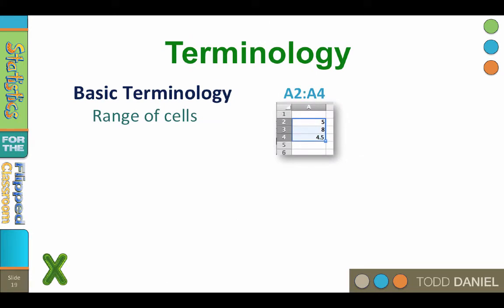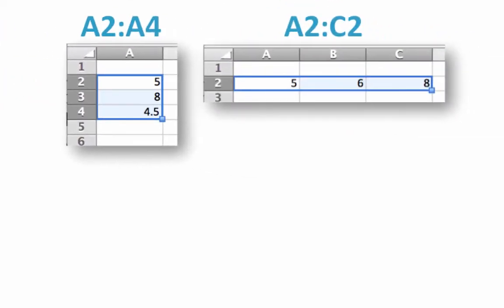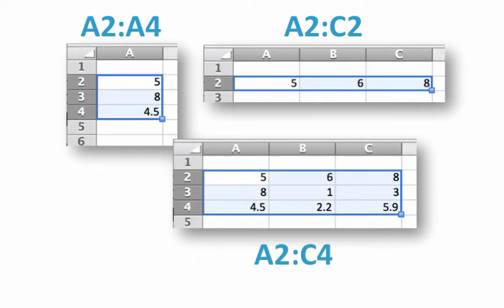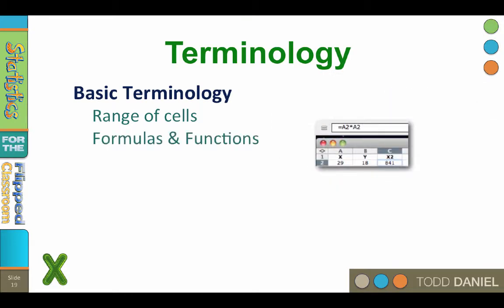Cells next to one another are called a range of cells. When referencing a range of cells, reference the first cell followed by the last cell, separated by a colon. For example, this column of three cells would be referenced as A2:A4. This row of three cells would be A2:C2. If you're referencing A2:C4, you're referencing a block of cells. When you enter numbers into a range of cells and then perform calculations on them, you can use a formula.